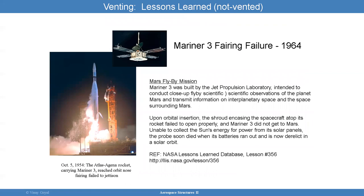The Mariner 3 failure — you can find it in the NASA Lessons Learned Database entry 356. Mariner 3 was built by JPL for observations. Upon orbit insertion, the encasing of the spacecraft failed to open properly. When they looked at it carefully, it had to do with an unvented honeycomb venting scenario, and that's another issue that was found to merit some attention.